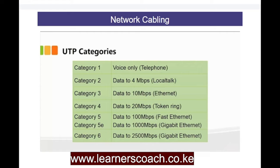Cat one, cat two, cat three — that's the industry standard when talking about cables. Cat four can handle data up to 20 Mbps, also referred to as MIPS, and is required within a token ring network. Cat five, which is very common, has data up to 100 MIPS and is known as fast Ethernet — so cat five and fast Ethernet are synonymous. Then we have category 5e, which is gigabit Ethernet, and cat six up to 2500 MIPS.